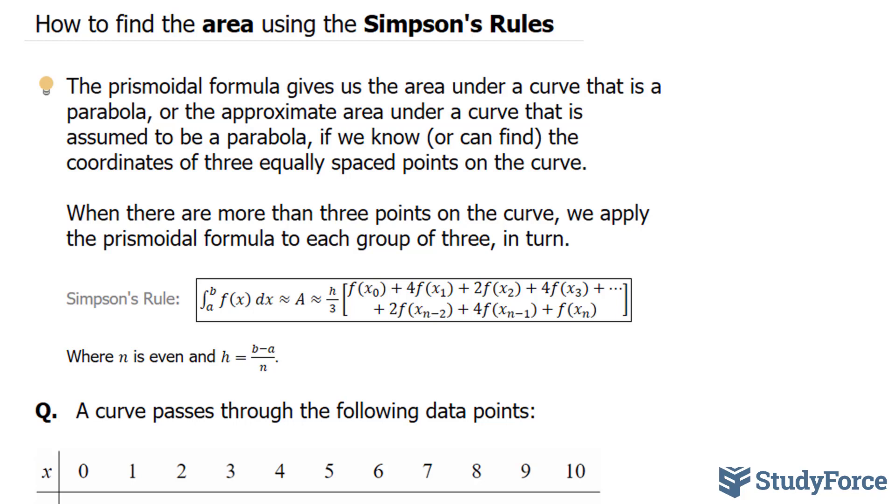When there are more than three points on the curve, we apply the prismoidal formula to each group of three in turn, and this gives rise to Simpson's rule.